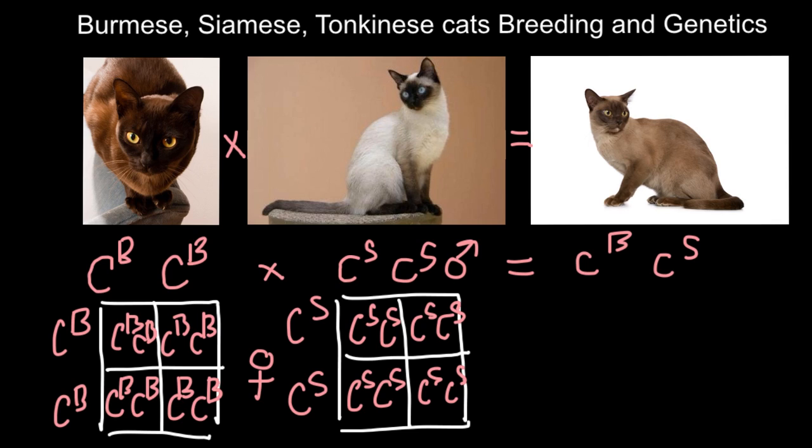But what would happen if we cross one Tonkinese with another Tonkinese? Are we going to get the same result, all the kittens looking the same? This is not so. Take a look. We have another cat that is C^B and C^S. Once again, when we build a Punnett square...